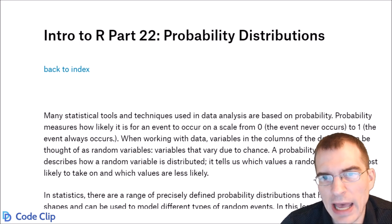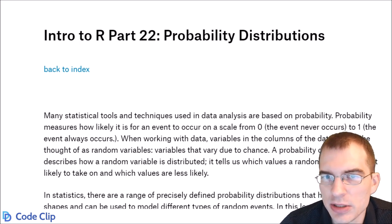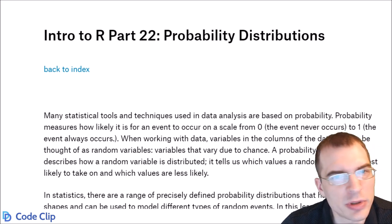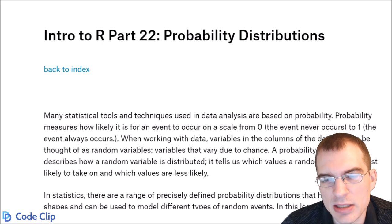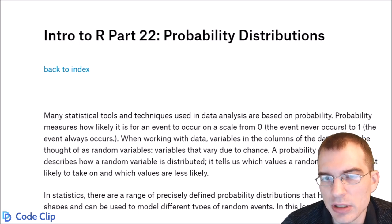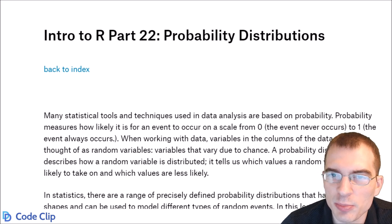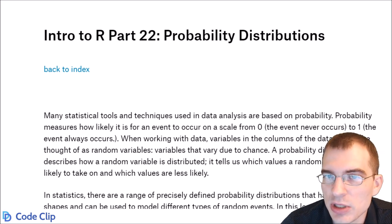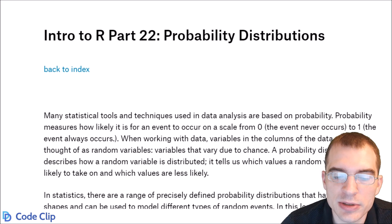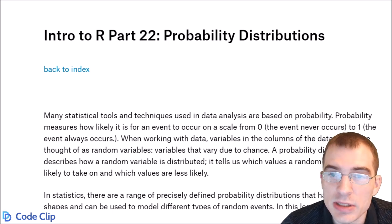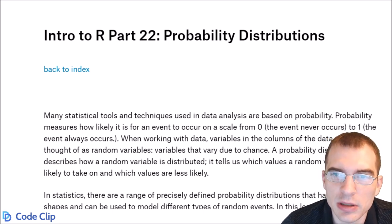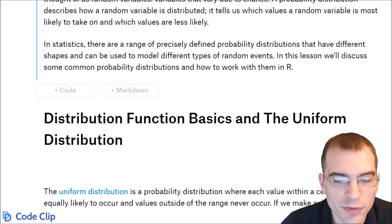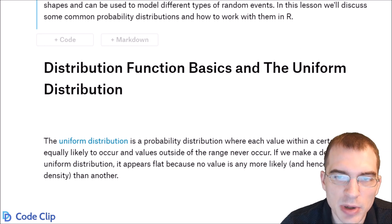In the real world, we don't have access to the actual probability distributions that generate the data we see. We don't completely understand the processes that generate data, so we use approximations to model what the underlying probability distributions might be. There are many precisely mathematically defined probability distributions in statistics with different shapes and properties that can be used to model different sorts of random events. In this lesson, we'll discuss some of those well-defined distributions and how to work with them in R, starting with the uniform distribution.